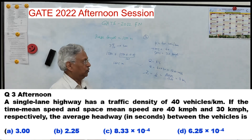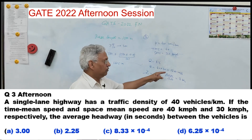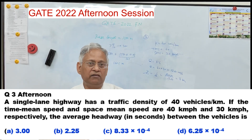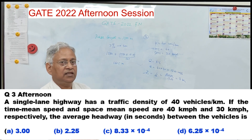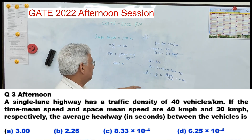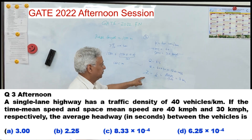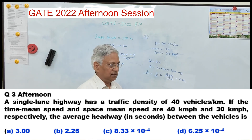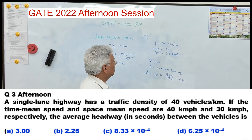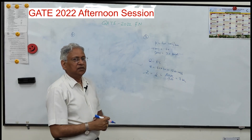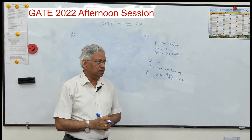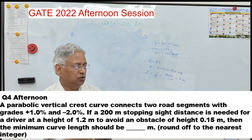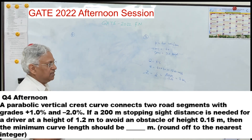Average headway = 1/q = 3600/1200 = 3 seconds. At 1200 vehicles per hour, every 3 seconds there will be one vehicle. That is the headway — the answer is 3 seconds.